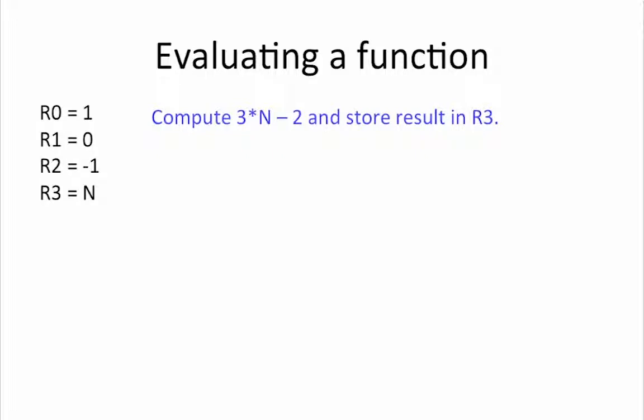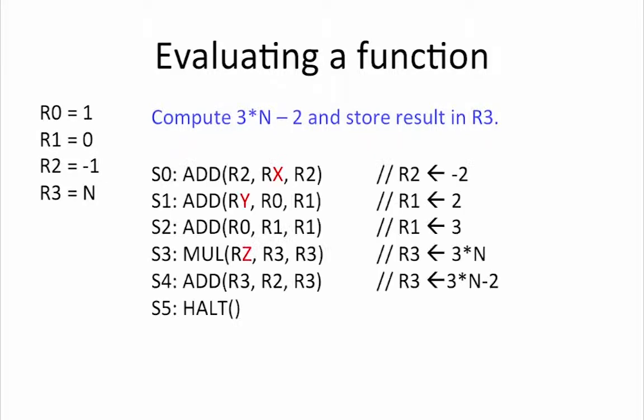Our job is to design the control FSM so that it produces the correct signals to achieve what we want. To help us get started, here is an incomplete listing of the code that will achieve what we want. The SX labels are the names of the states corresponding to each instruction in our program. Our first job is to figure out the values of Rx, Ry, and Rz so that our code behaves as expected.